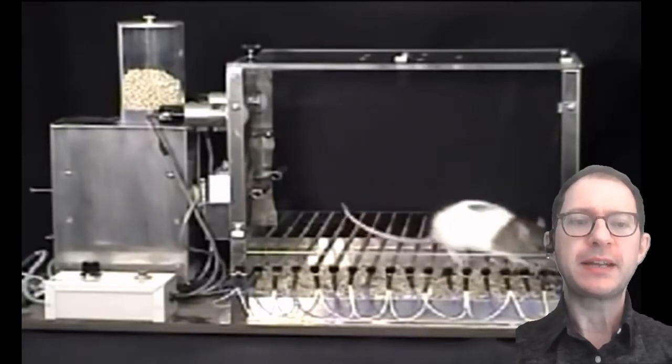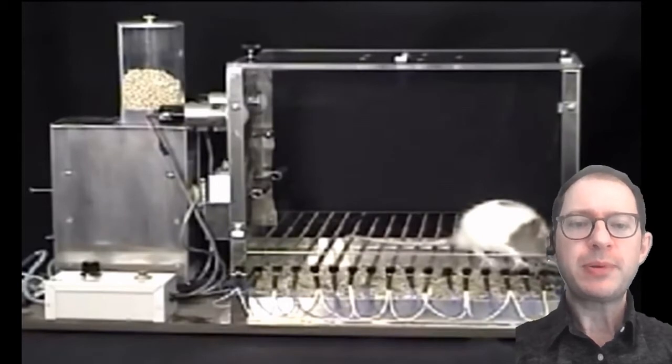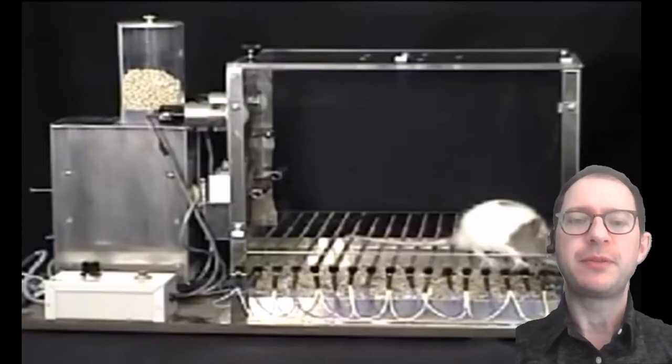We see that the rat is quite active in the box. This is because it is hungry. We cannot tell the rat you can press the lever and food will come out, and this is the problem that shaping solves for us. It is a way to communicate with the animal.